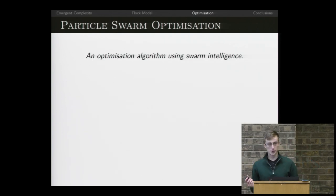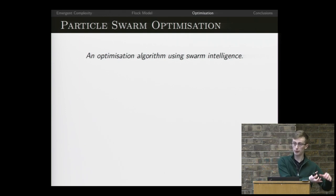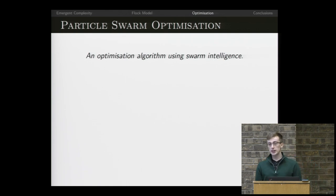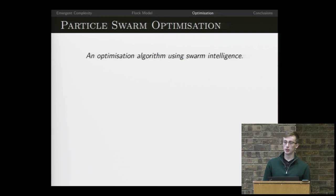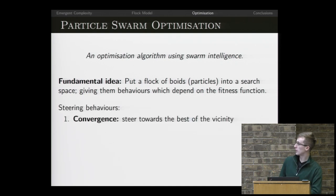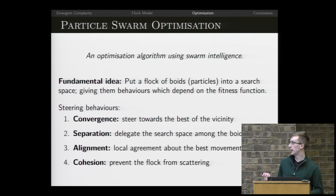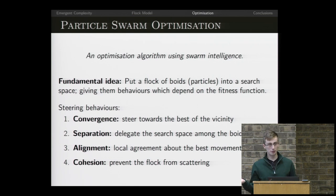Particle swarm optimization is a really simple idea. We're going to take our flock of birds and move them into the search space for the function, then give them some new behavior — called convergence — that corresponds to them wanting to move in the direction that minimizes the function. We'll also leave in place the other three behaviors we already have.